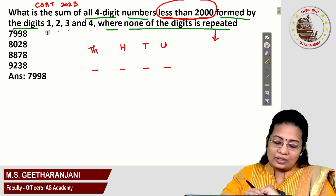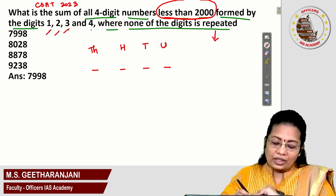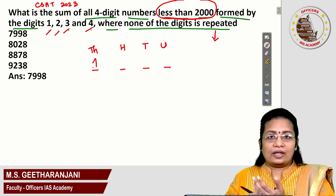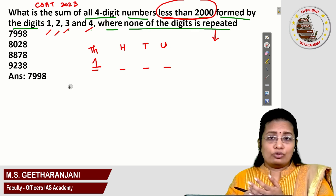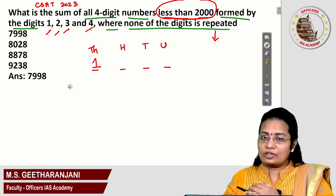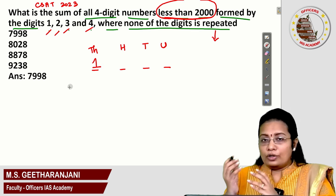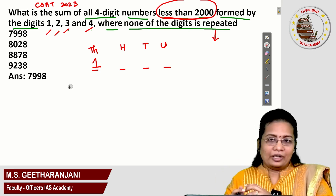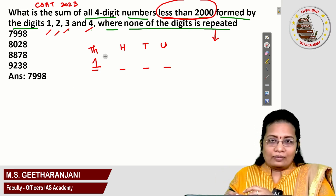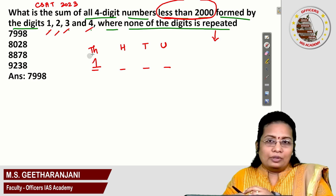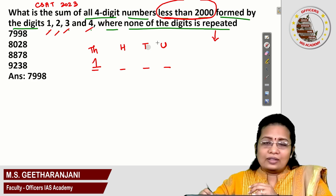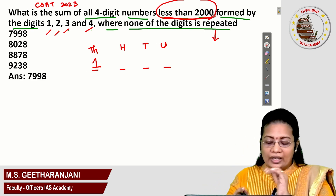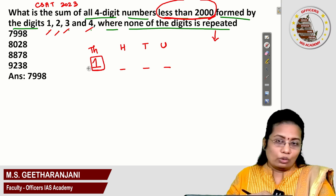What are the given digits? They are 1, 2, 3 and 4. So except 1, if you place any value — 2, 3, or 4 — in the thousands place, the number will be 2000 or more. So except 1 in the thousands place it is not applicable, because we need to create numbers less than 2000. Don't take any number other than 1 in the thousands place.